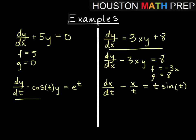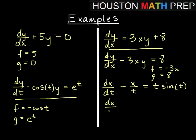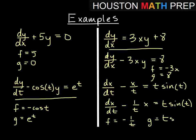Moving to the bottom examples: dy/dx minus cosine(t) times y equals e to the t, with independent variable t and dependent variable y. It's already in linear form — f equals negative cosine of t and g equals e to the t, both depending only on t, not on y. For the bottom right example, dx/dt, we can write it as dx/dt minus 1 over t times x equals t sine of t, giving f equal to negative 1 over t and g equal to t sine of t.